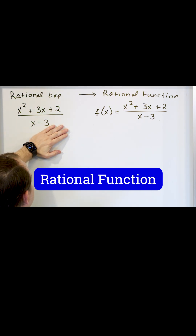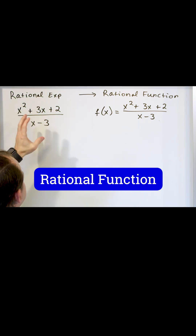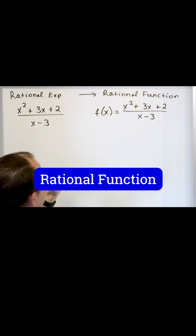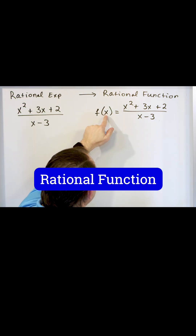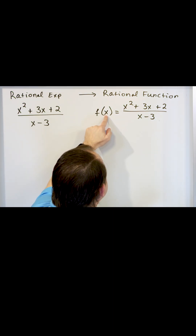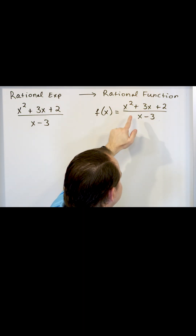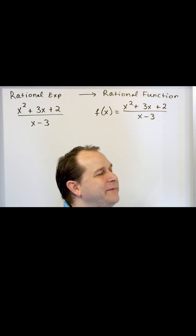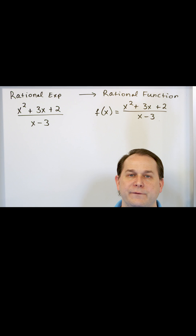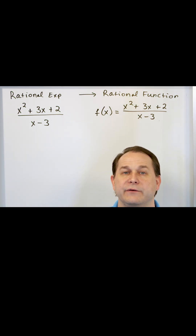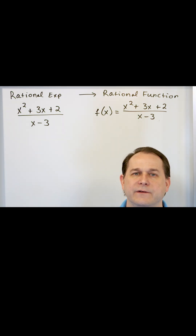Any rational expression you have is an expression that has x's in it. Now we can take it and turn it into a function. Remember, a function takes input values of x and then calculates the output value from this expression, and then out pops the output value. So if you put input values of x in, you get output values — what we call f values — out.